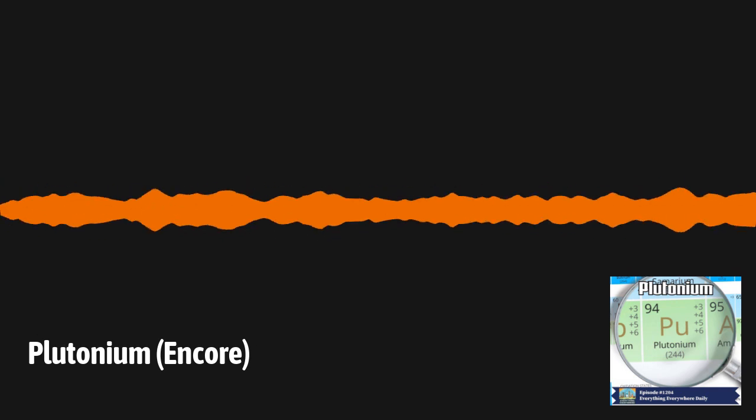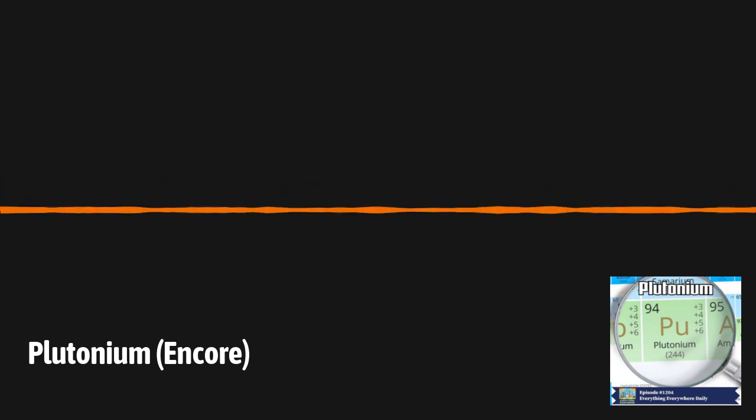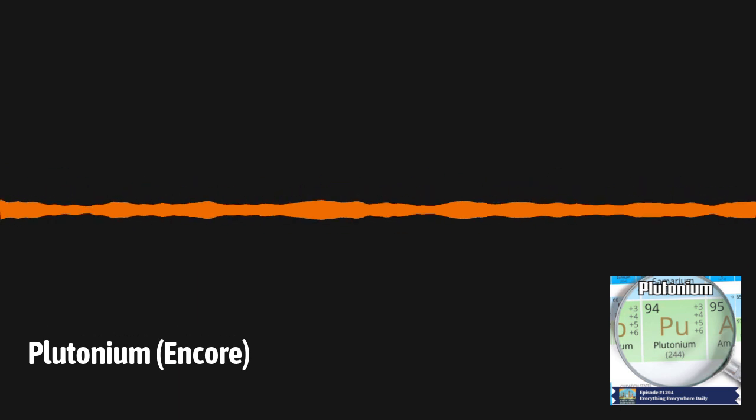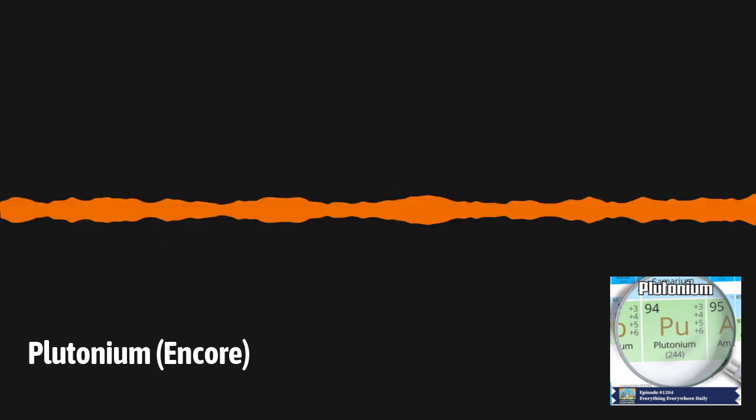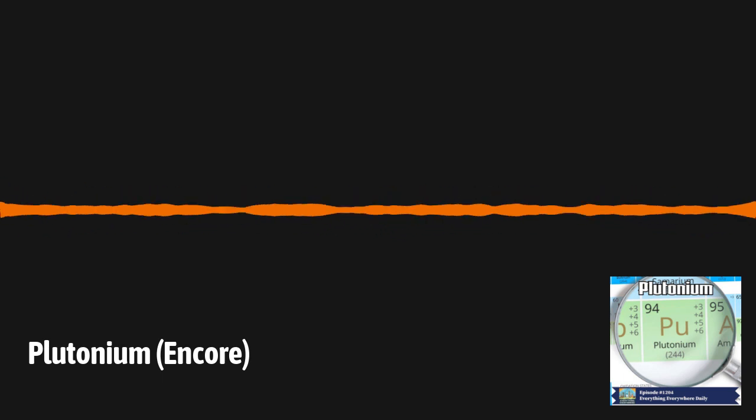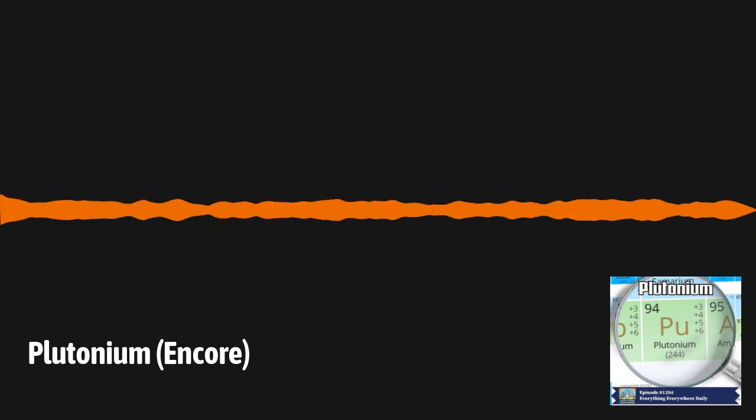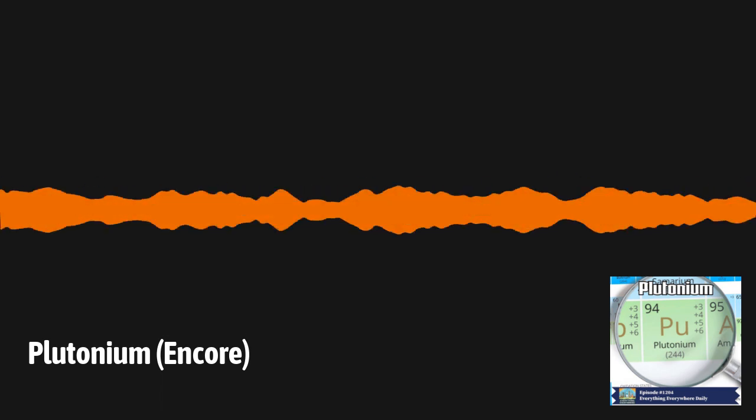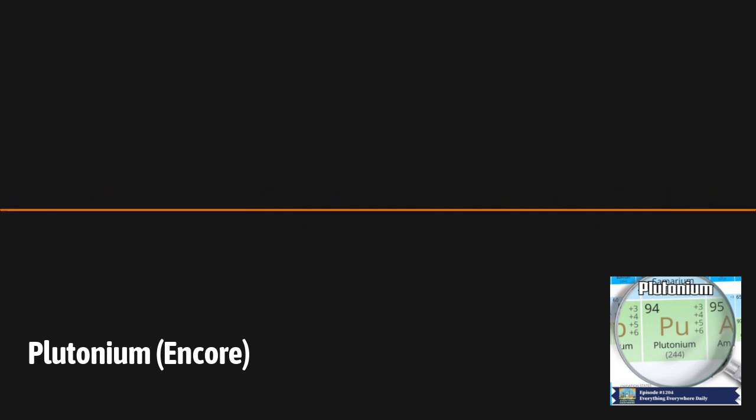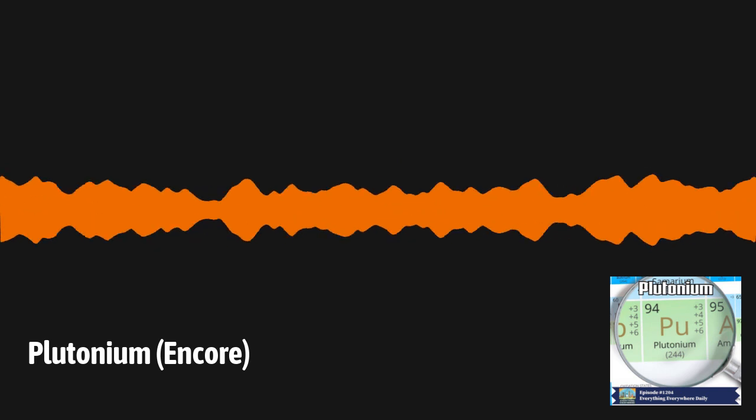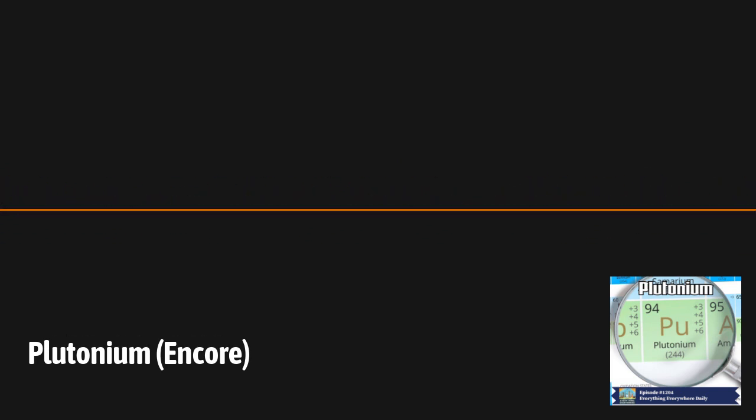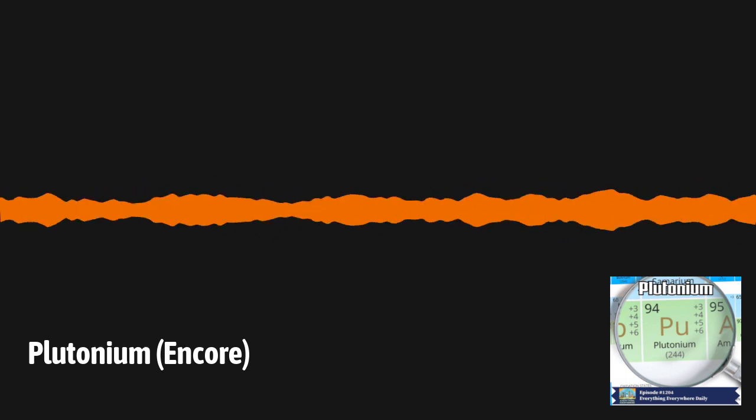In 1942, after the first controlled nuclear fission reaction took place by Enrico Fermi at the University of Chicago, enough plutonium was finally produced where its physical properties could actually be studied. The process of nuclear fission is how almost all plutonium is created. Plutonium-239 is created when a uranium-235 atom splits, ejecting a neutron which is captured by a uranium-238 atom, turning it into uranium-239. A neutron then engages in beta decay, turning it into a proton, and ejecting an electron, turning it into neptunium-239, and then a second beta decay occurs, turning it into plutonium-239.